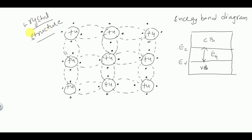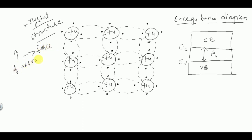This diagram represents the crystal structure of a semiconductor, and this diagram represents the energy band diagram of the intrinsic semiconductor. These four electrons represent the four valence electrons. Not all electrons in the atom participate in current conduction because they are bounded to the nucleus. As the distance from the nucleus increases, the force of attraction of the nucleus on the electrons decreases, so valence electrons can become free very easily.